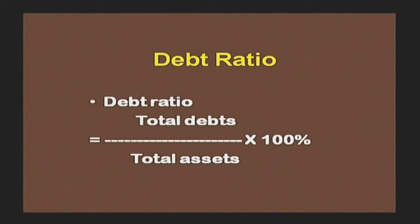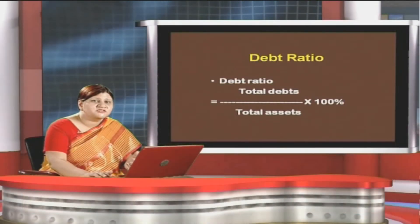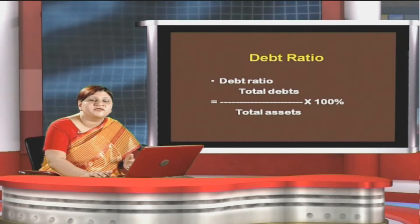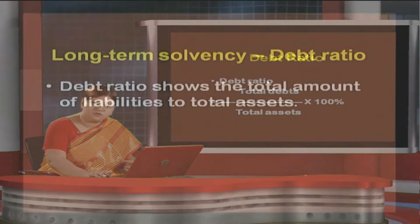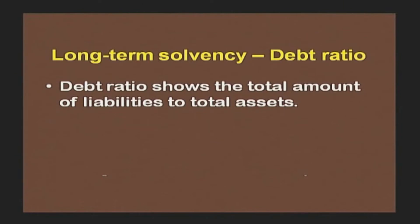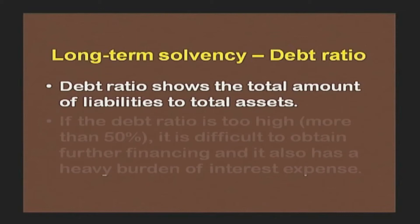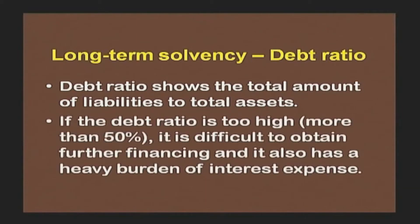This is how debt ratio is computed — it shows what percentage of debt a company has in relation to its assets. Debt ratio shows the total amount of liabilities to total assets. If the debt ratio is too high — more than 50% — it is difficult to obtain further financing, and it also carries a heavy burden of interest expenses.